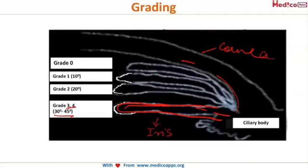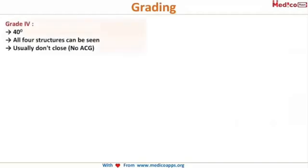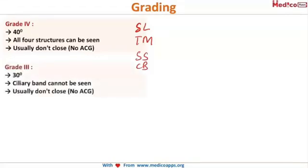As the iris moves forward, the angle size decreases from 20 degrees to 10 degrees to 0, corresponding to grade 2, grade 1, and grade 0. Grade 4 is when the angle is 35 to 40 degrees open, and all four structures are seen: Schwalbe's line, trabecular meshwork, scleral spur, and ciliary body — in that order.